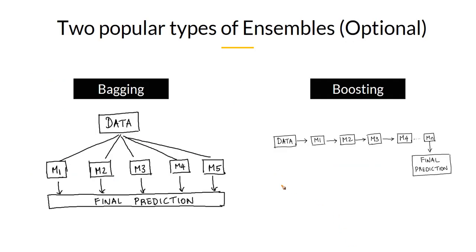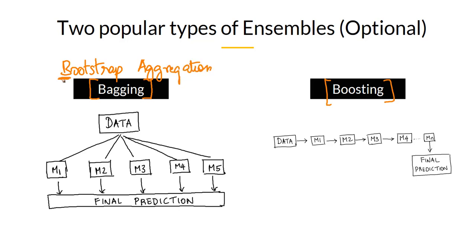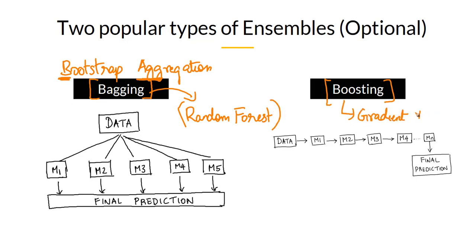In general, there are two very popular ensemble approaches — bagging and boosting — though it is not limited to only these two. Bagging is short for bootstrap aggregation: the 'B' comes from bootstrap and 'AGG' from aggregation. Random forest is actually a type of bagging algorithm, likewise gradient boosting is a type of boosting algorithm.